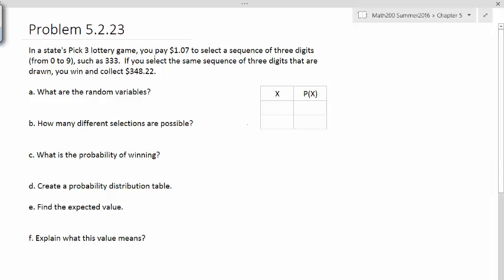We have a lottery game where you select three numbers, you pay $1.07, and then if you win, if they select your three-digit number, you win $348.22. So that's the game, that's our scenario, and they ask us a bunch of questions like what are your random variables, how many different selections are possible, probability of winning, etc.